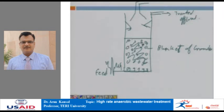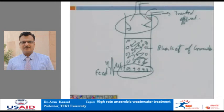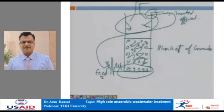Basically, the UASB consists of a gas-solid-liquid separator to retain anaerobic sludge within the reactor, an influent distribution system, and an effluent draw facility. With a suitable feed inlet distribution system, effluent recycling is not necessary because uniform distribution is achieved; otherwise, effluent has to be partly recycled.